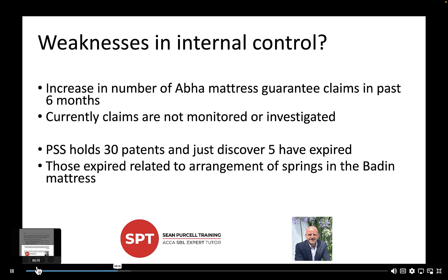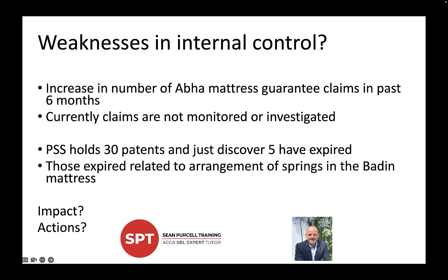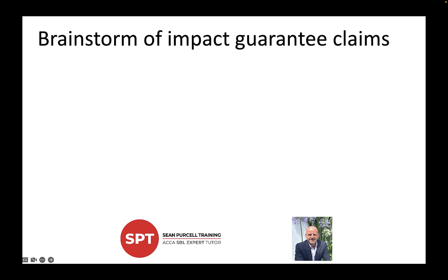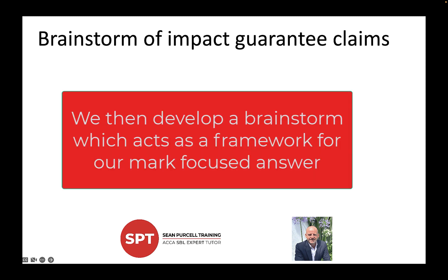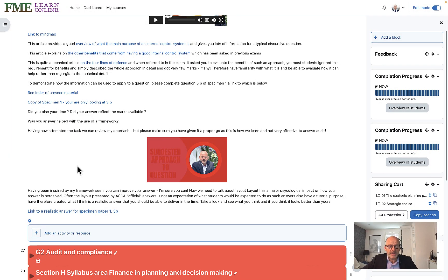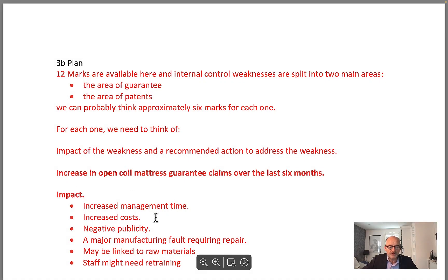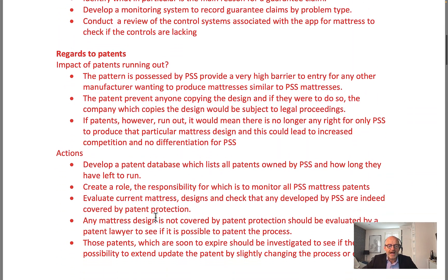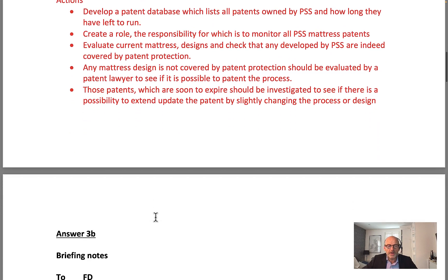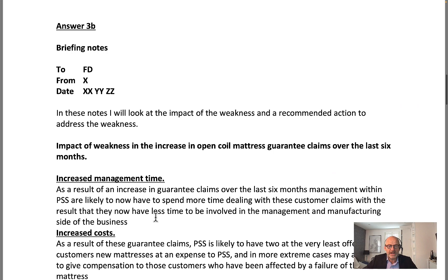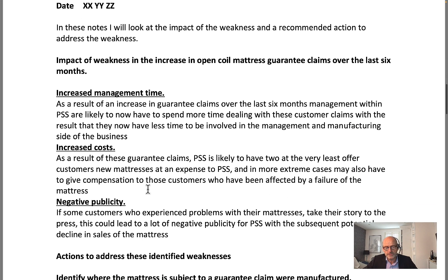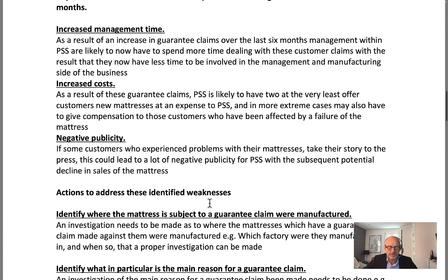For each of the two internal controls we need to think about impact and action. With 12 marks available, we're probably looking at about six for each — so three marks per element. Let's brainstorm what we can say about the guarantee claims. As there are multiple ways of answering SBL questions, I've also created a realistic model answer. We use subheadings, white space, and develop the brainstorm into a high-scoring exam answer.